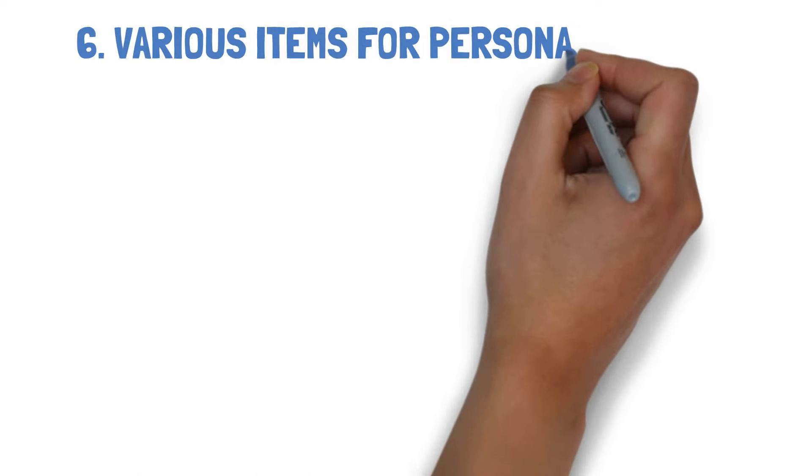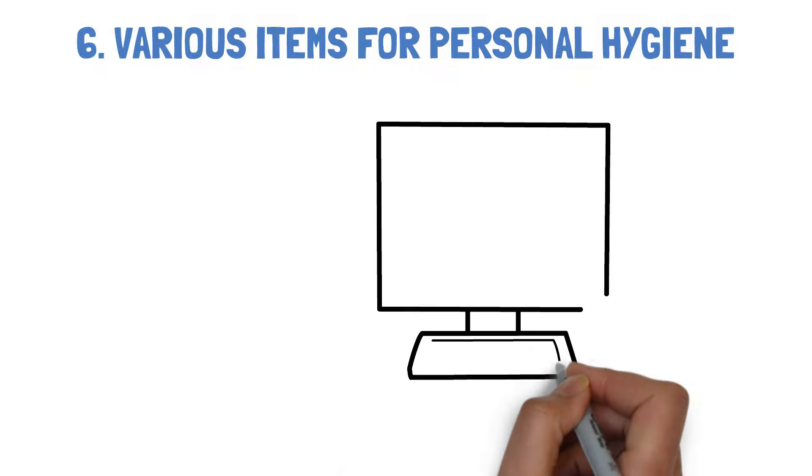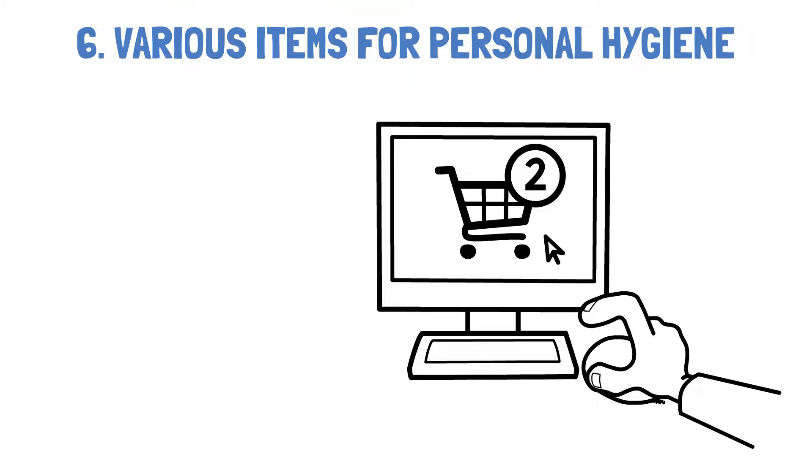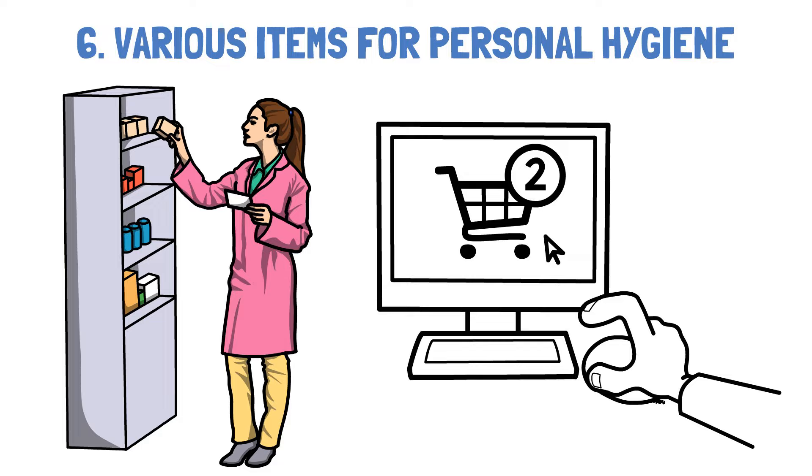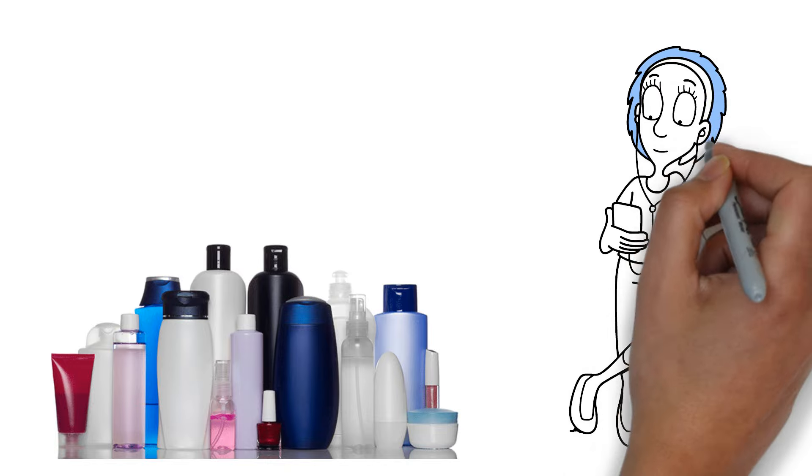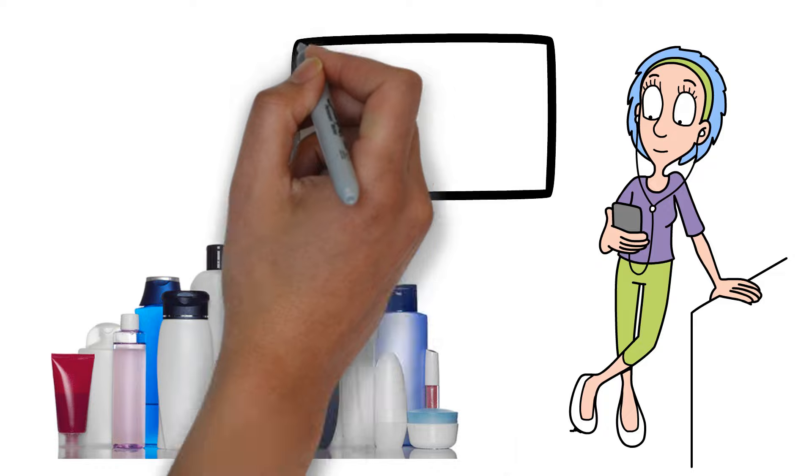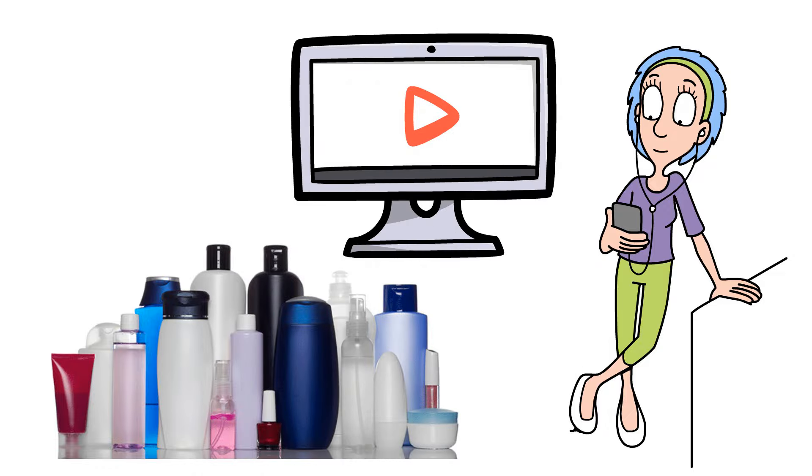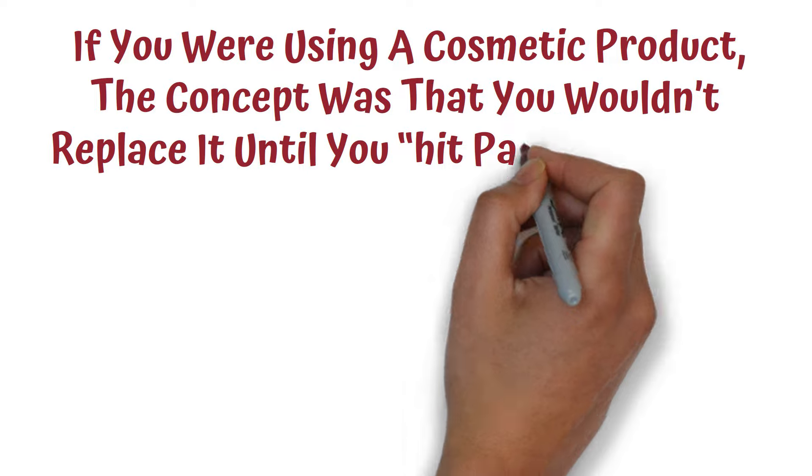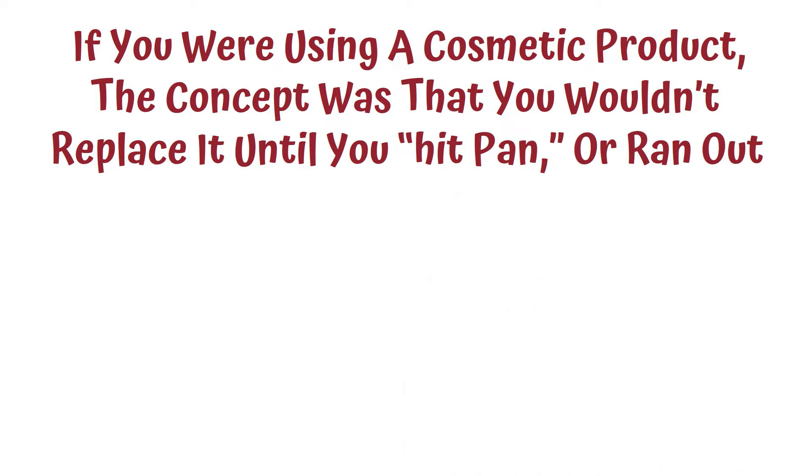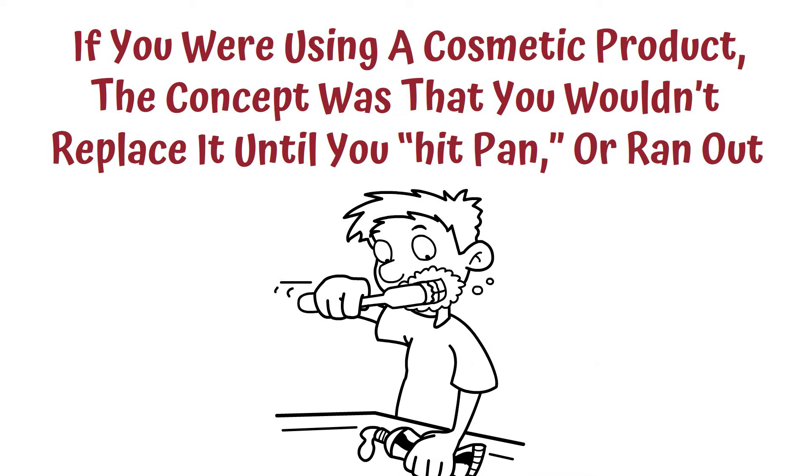Number 6: Various items for personal hygiene. The idea of buying a new edition of a product before the old one ran out would never have occurred to previous generations. This is something we do often, however. Even though we probably have more personal care products than we can use before they expire, many of us still follow every advice and watch every TikTok video that shows the greatest new one. A project pan was all the rage on YouTube not long ago. If you were using a cosmetic product, the concept was that you wouldn't replace it until you hit pan or ran out. Aside from the obvious financial benefits, this also makes organizing the bathroom much simpler and does away with the need to settle with subpar options.